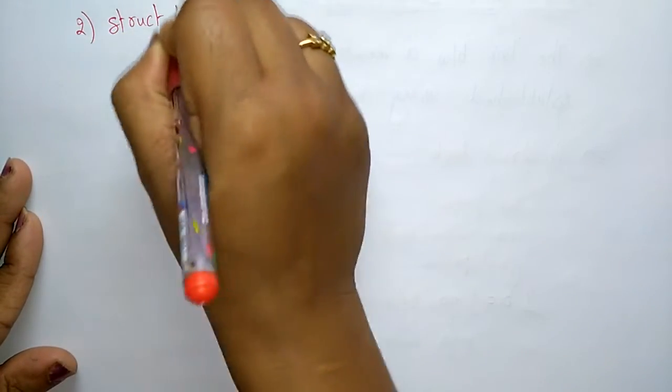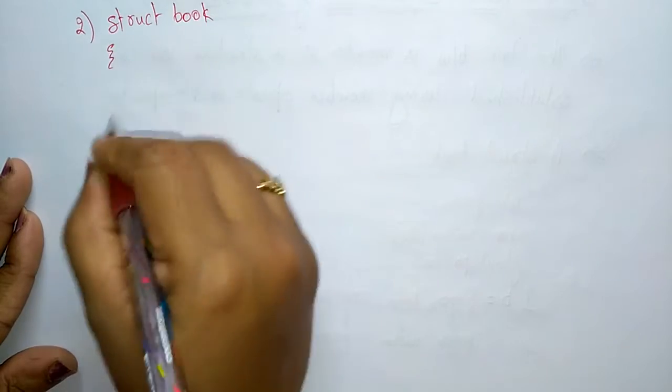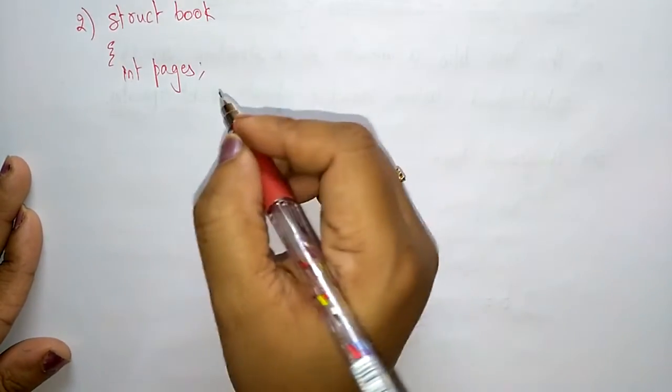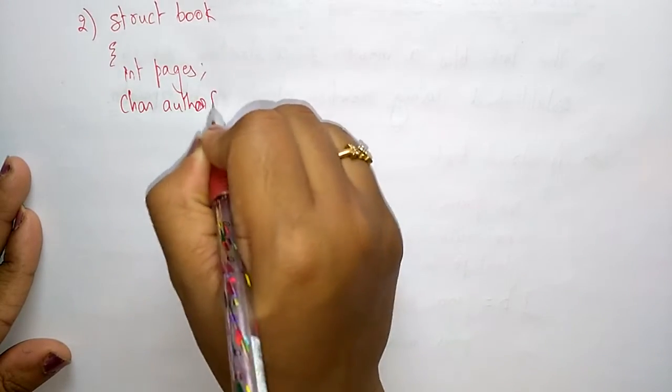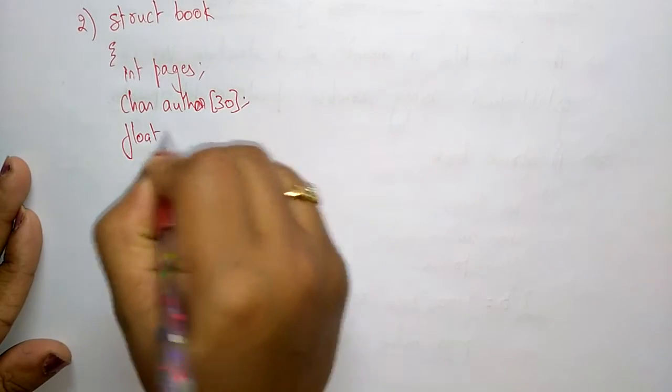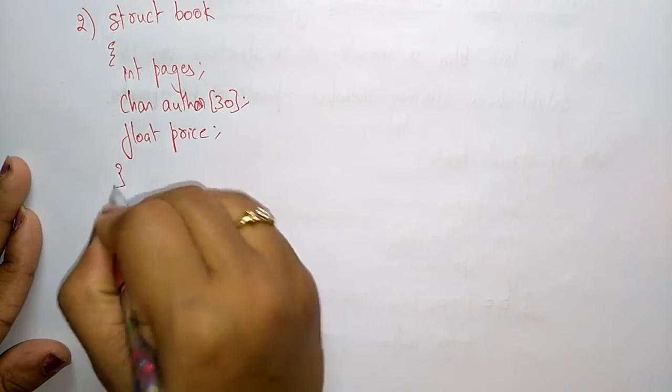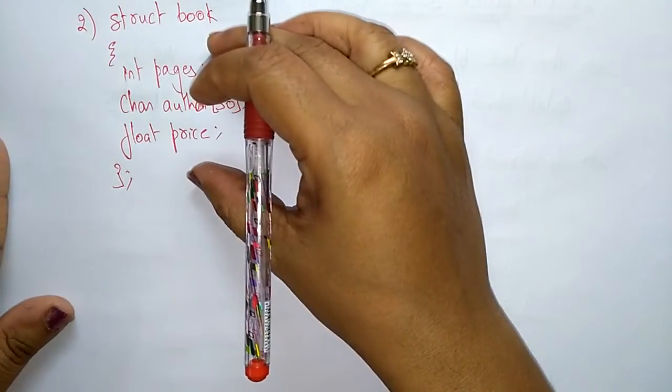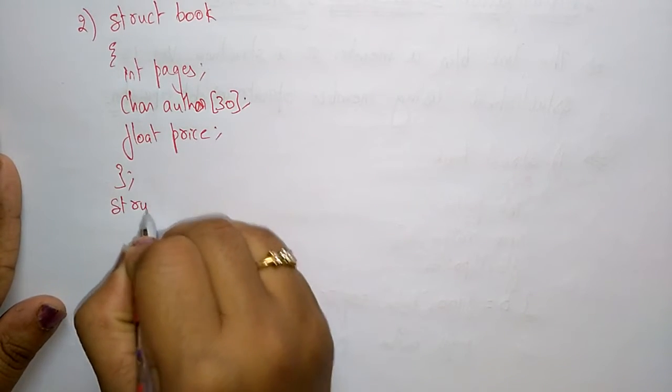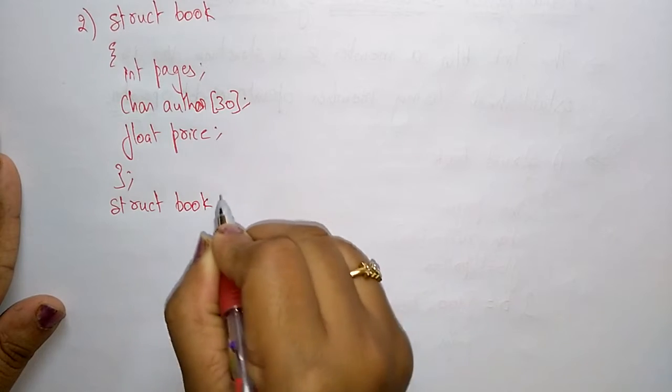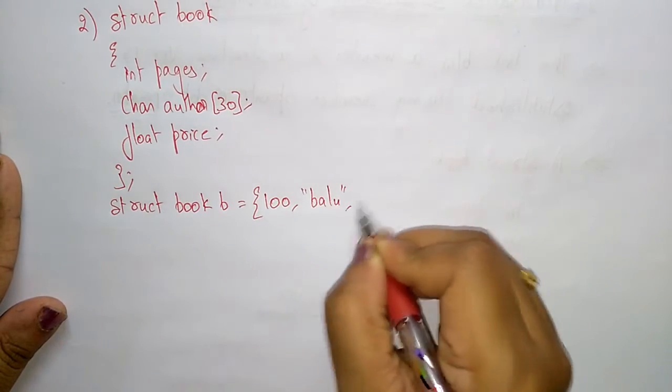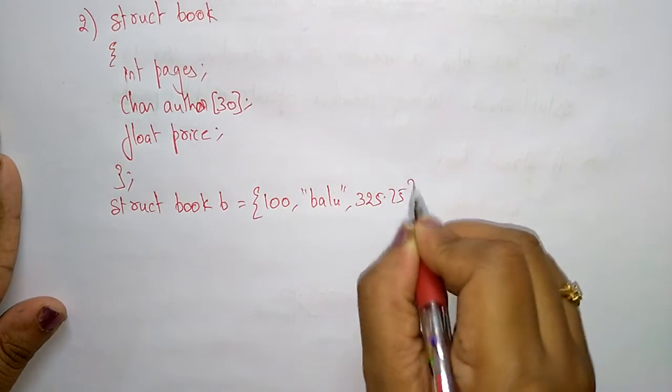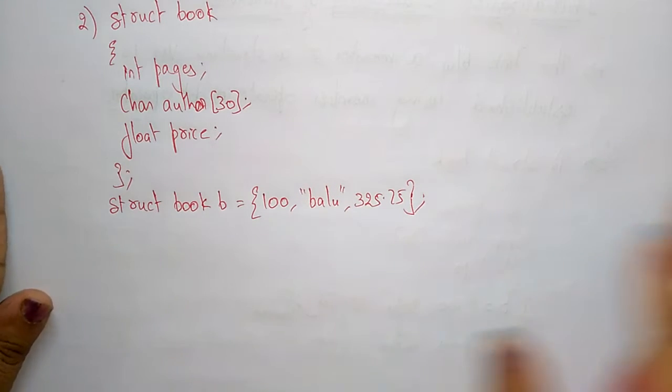struct book { int pages; char author[30]; float price; }. I'm closing this structure definition, but after the definition I'm initializing: struct book B = {100, "Balu", 325.75}. This is the second method.